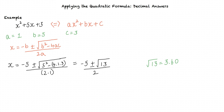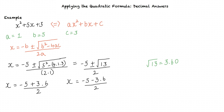The square root of 13 can be found to be 3.60. Thus the two roots are x equals negative 5 plus 3.6 divided by 2, and x equals negative 5 minus 3.6 divided by 2. Hence, x equals negative 0.7 and x equals negative 4.3.